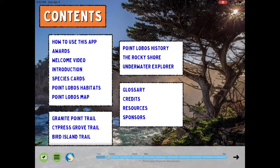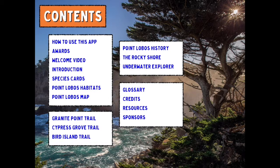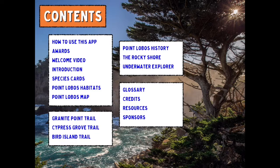If you need help on how to use the app and you don't know how to do that, ask any 10-year-old and they'll let you know. The Discover Point Lobos app has two levels to it. The top level has lots of information including some games, the history, the rocky shore, and various things of that nature. Underneath are the species cards, which are used to interact with the upper level, and there are about 94 different cards that explain the various plants and animals that can be found here.